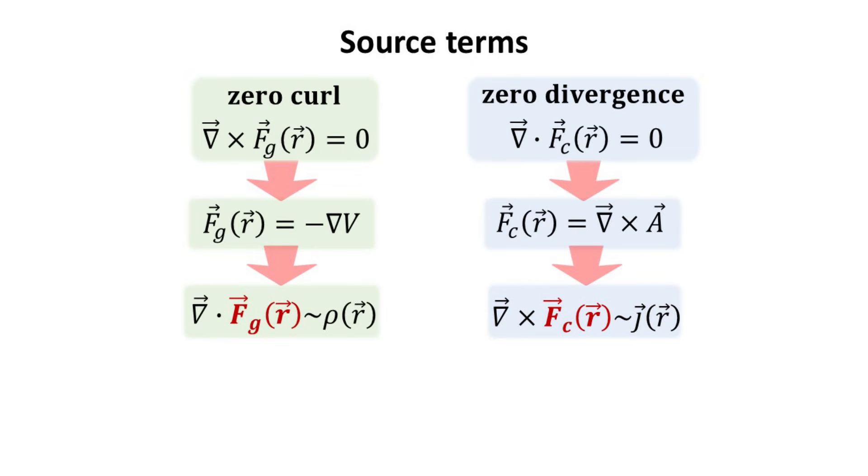The curl field which has zero divergence has finite curl which can be attributed to a vector source function, herein represented by J. Next, let's replace these gradient and curl fields with their respective potentials. The potential V for F_G and the vector potential A for F_C.